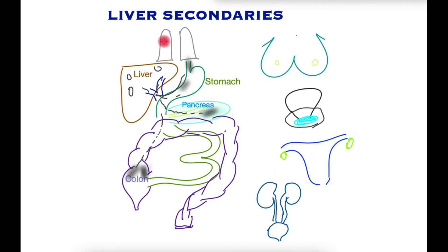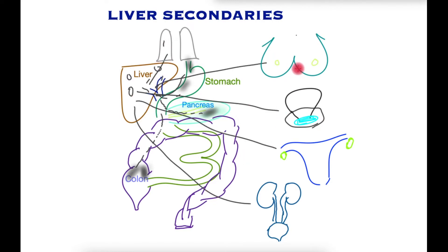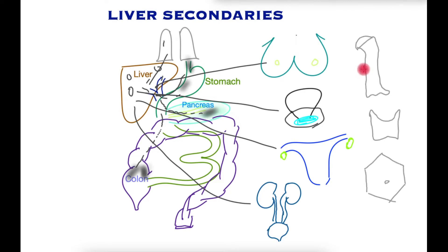All of these may produce spread to the liver from cancers that have primarily arisen in these organs. Pretty much cancers arising anywhere else in the body may find a destination in the liver, such as the bone, the thyroid gland, or skin cancers.